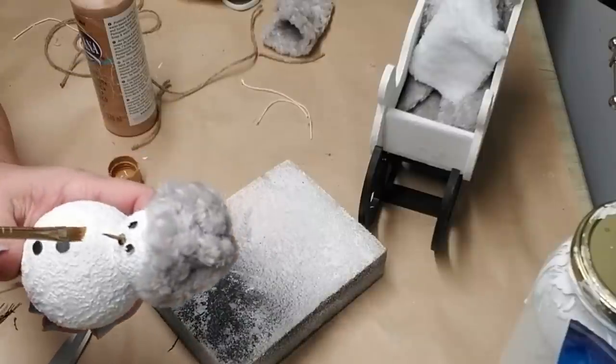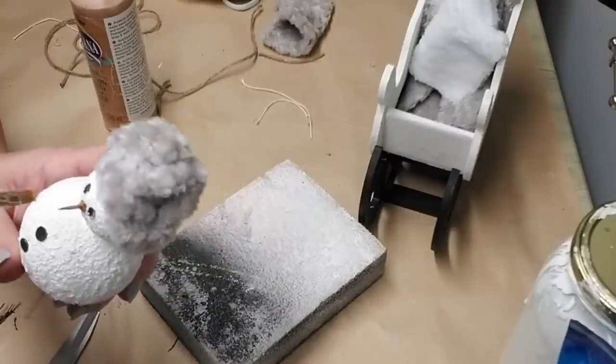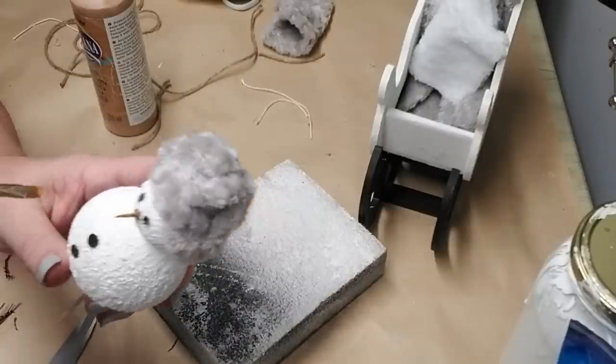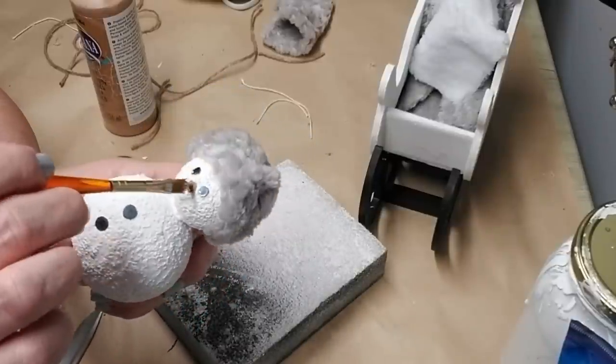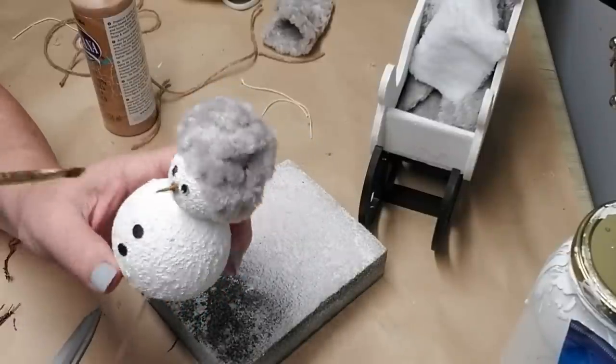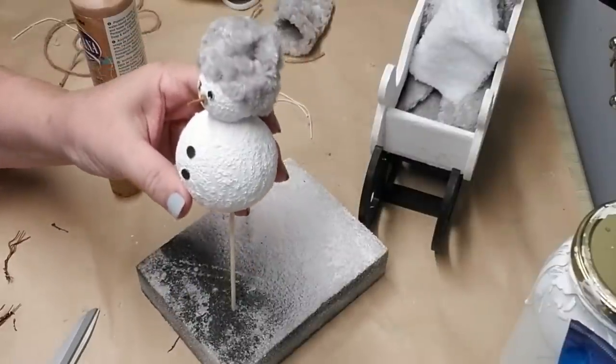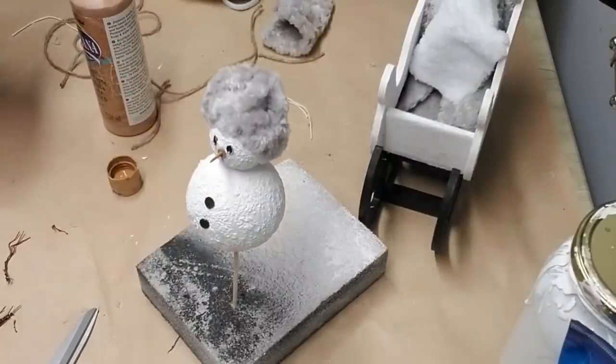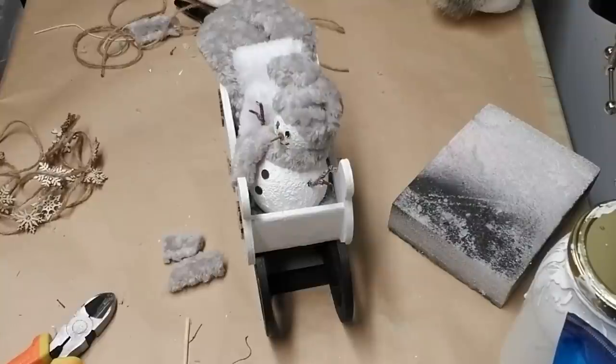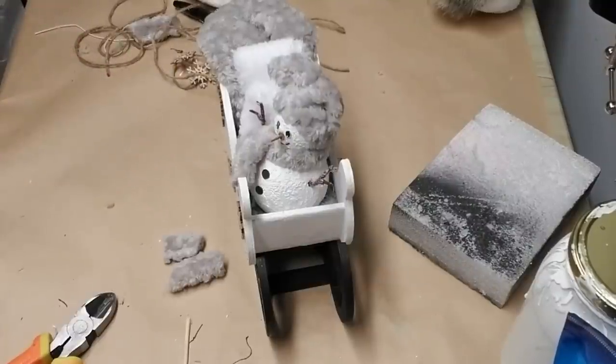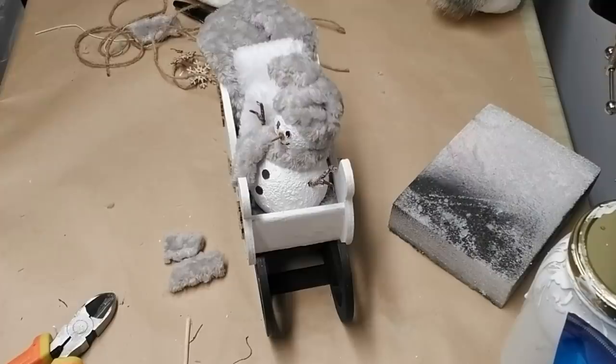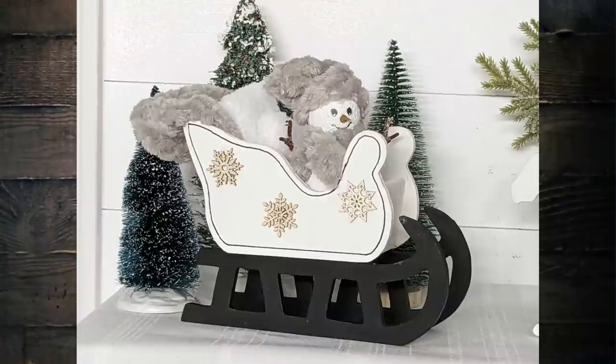I like using these little upholstery tacks as eyes and buttons. Then I take one of them and I glue it backwards to make his nose. Now I'm just painting it with sort of a rusty orange color, and there you've got a little snowman. I cut off two pieces of branch from my frosted winter decor branches and set him inside the sleigh, added a few more snowflakes, and he looks so cute.